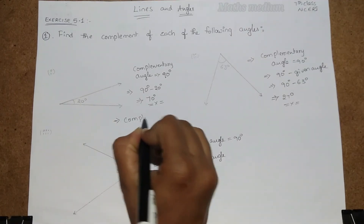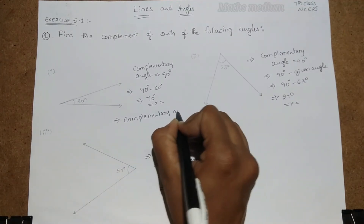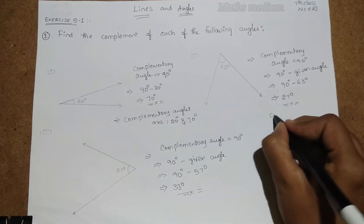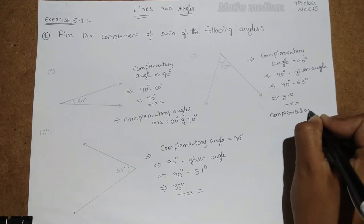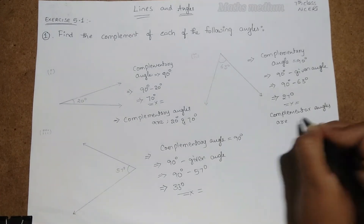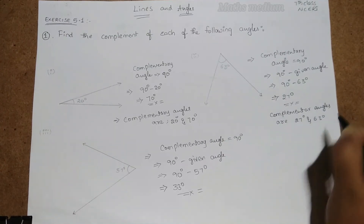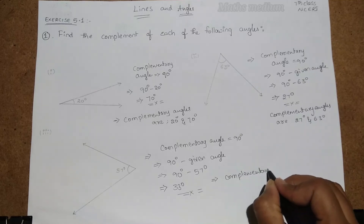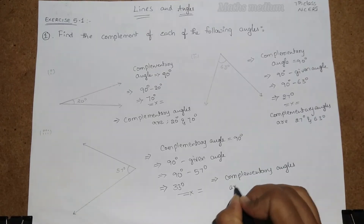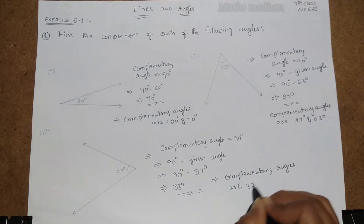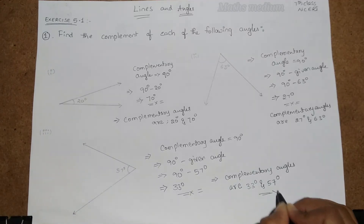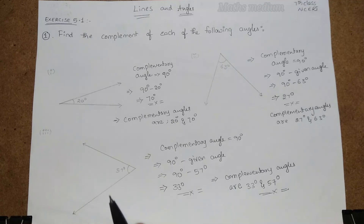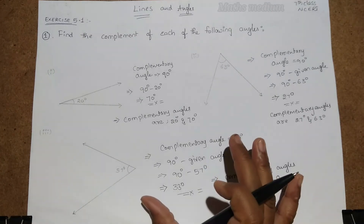So to summarize: the complementary angles are 20 degrees and 70 degrees; 63 degrees and 27 degrees; and 57 degrees and 33 degrees. This is how to find the complement of a given angle — simply subtract the given angle from 90 degrees and we get the answer.